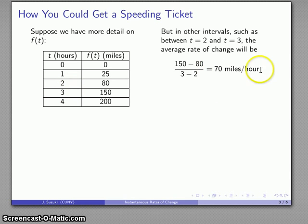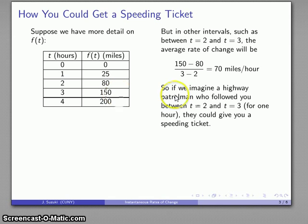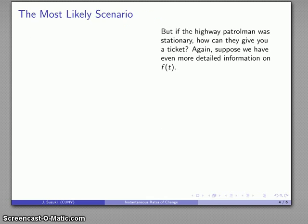So maybe in that interval I was going faster than the speed limit — and I had to have been. Perhaps that's when I got my speeding ticket. At some point the highway patrolman has to provide proof, so suppose they followed me for one full hour — 60 minutes — from t equals 2 to t equals 3. They determined that in that one-hour period I went 70 miles, giving an average speed of 70 miles per hour and grounds for a speeding ticket. But it's very unlikely a patrolman will follow you for an hour.